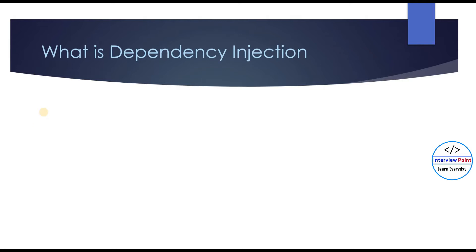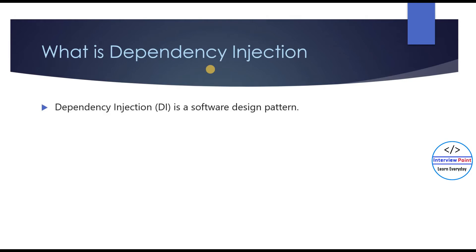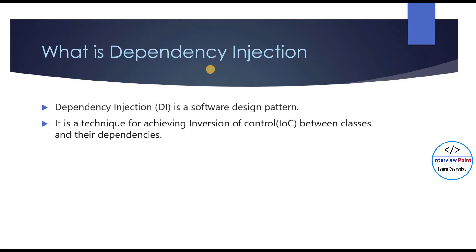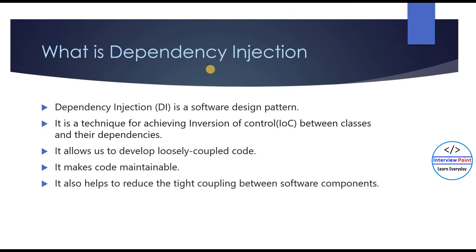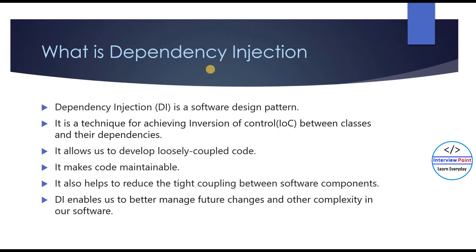So what is dependency injection in C#? It is a design pattern — a software design pattern — and it is a technique for achieving inversion of control between classes and their dependencies. It allows developers to develop loosely coupled code, it makes code maintainable, it helps to reduce tight coupling between software components, and dependency injection enables us to better manage future changes and other complexity in software development.